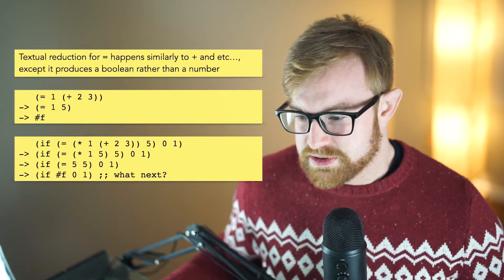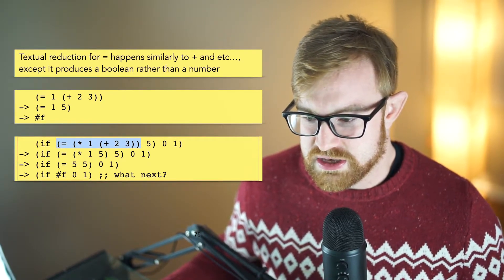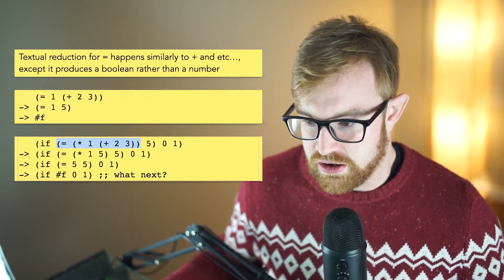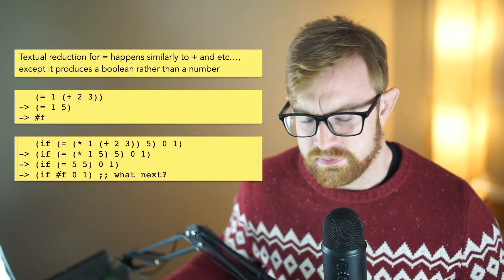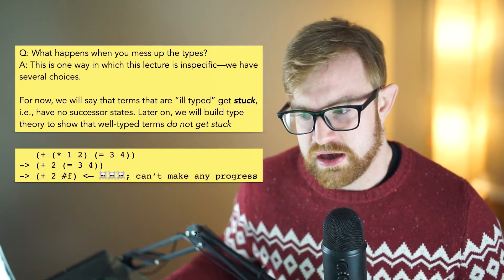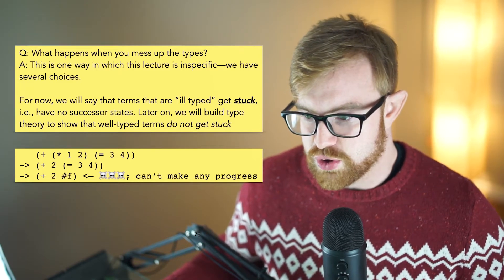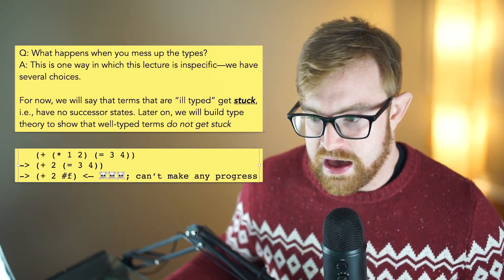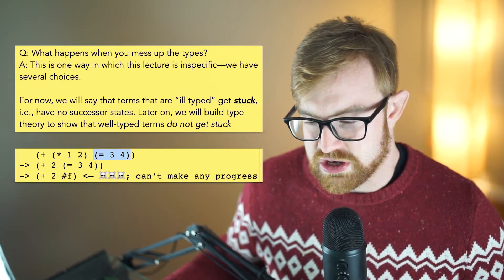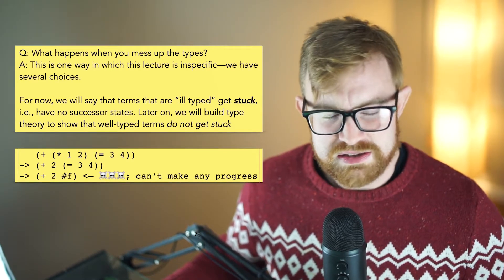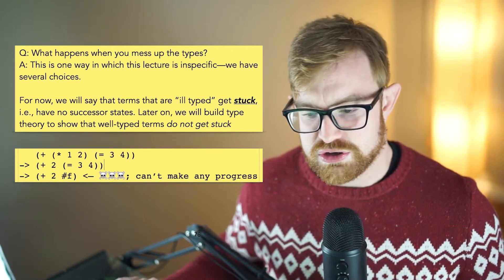But then the next problem is: what do you do with if? And I also want to make another note. One question is what happens when you mess up the types — for example, what happens if you try to add 1 times 2 to equals 3 times 4? Well, in this case, you actually have a few different choices as the programming language designer. You could choose to just not specify it, and that's actually what we're going to do here.